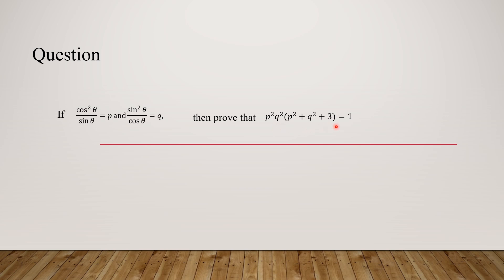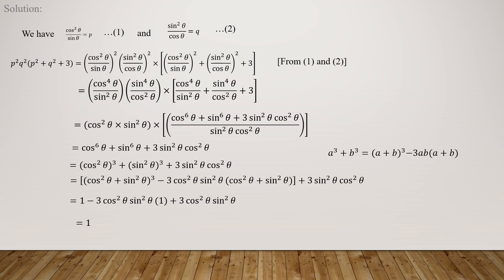Solution: given cos²θ/sinθ = p, take this as equation one, and sin²θ/cosθ = q, take this as equation two. We need to find the given form p²q²(p²+q²+3).